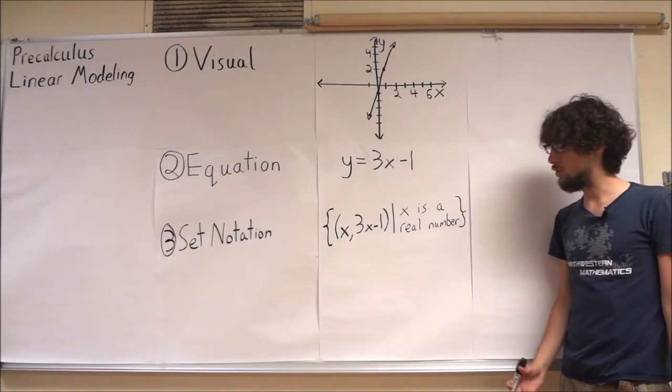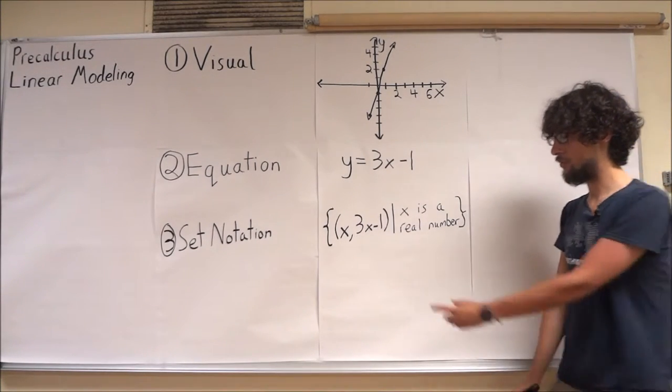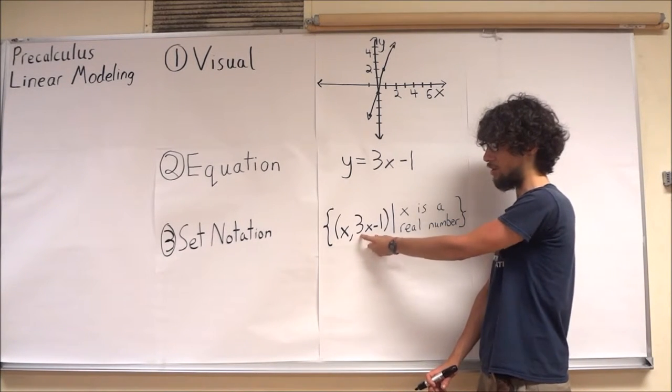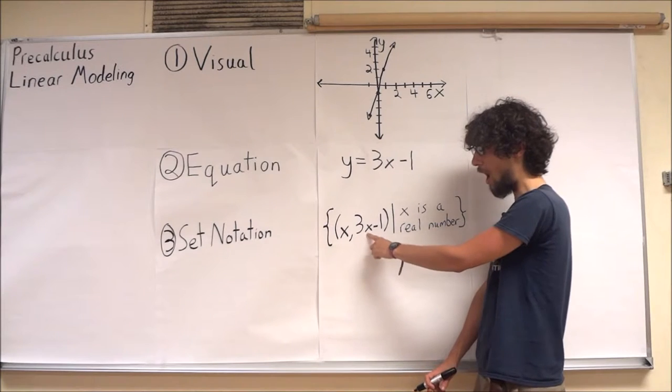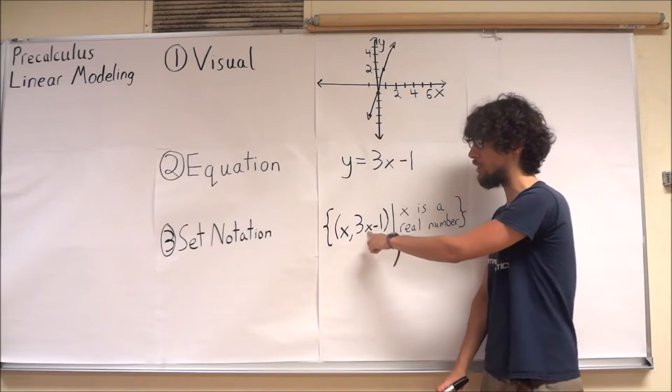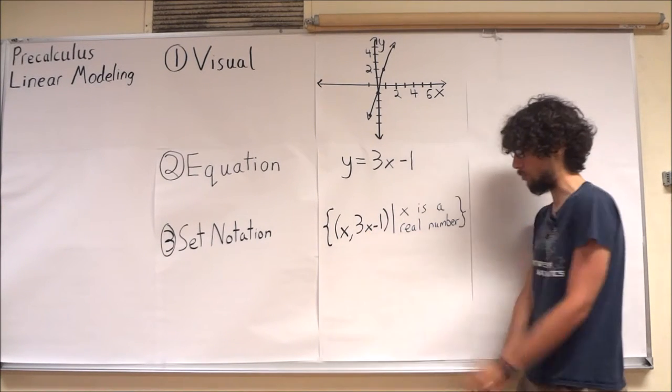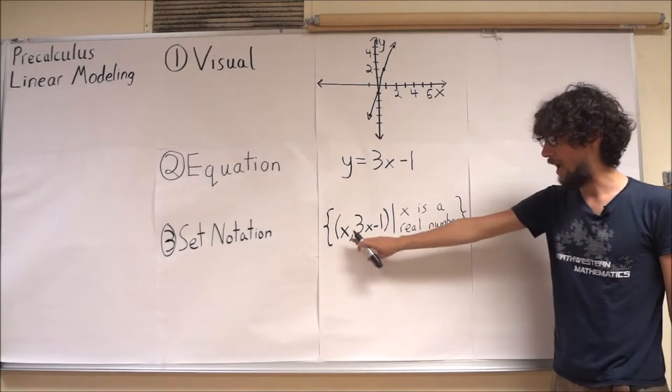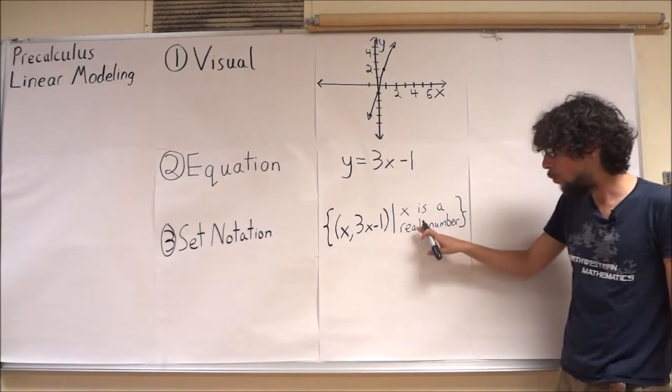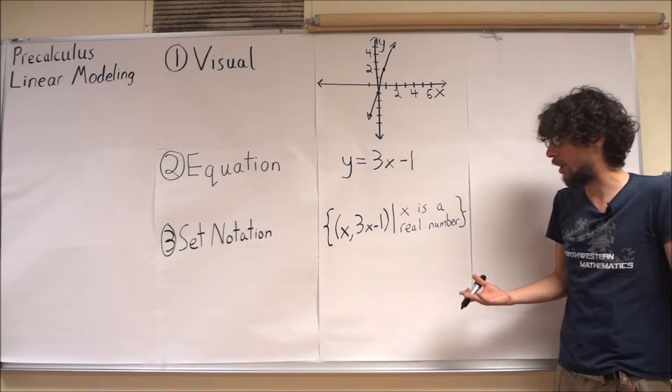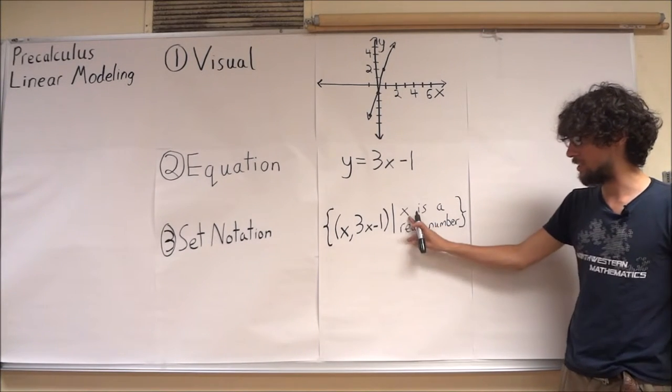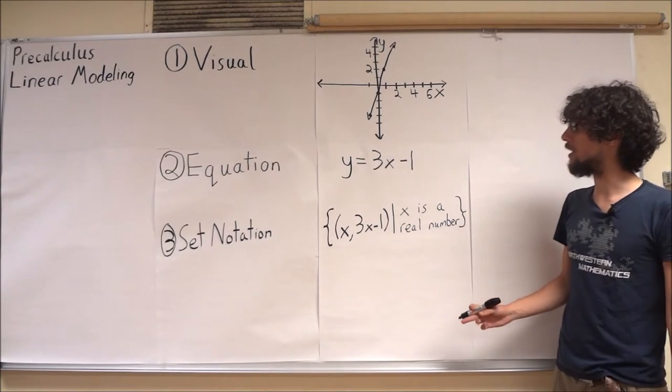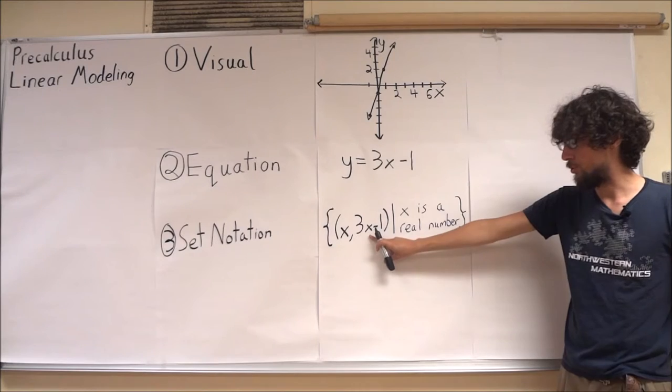Here's one way we can write this using our set notation. We have the set of points x and 3x minus 1. Notice that this is really x, y, where y we've rewritten as 3x minus 1. And we're specifying that we have these points where x is some real number. So we plug in x equals 0, we get 0, negative 1. We plug in x equals 1, we get 1, 2.